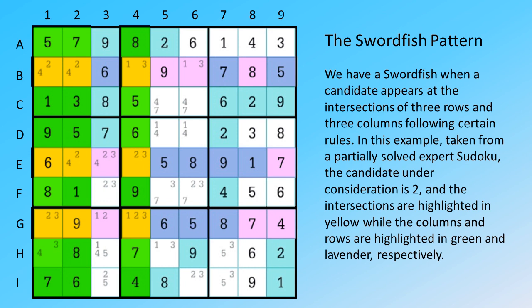In this example, taken from a partially solved expert Sudoku, the candidate under consideration is two, and the intersections are highlighted in yellow while the columns and rows are highlighted in green and lavender, respectively.